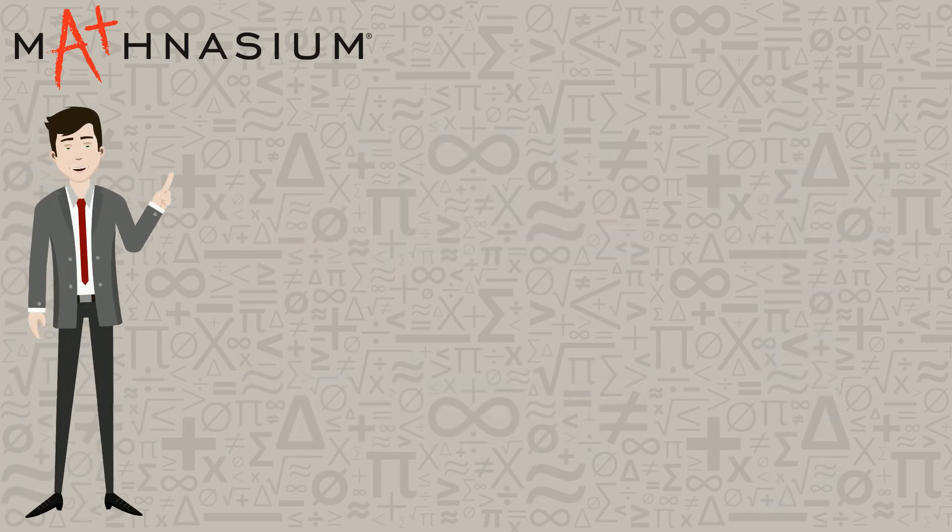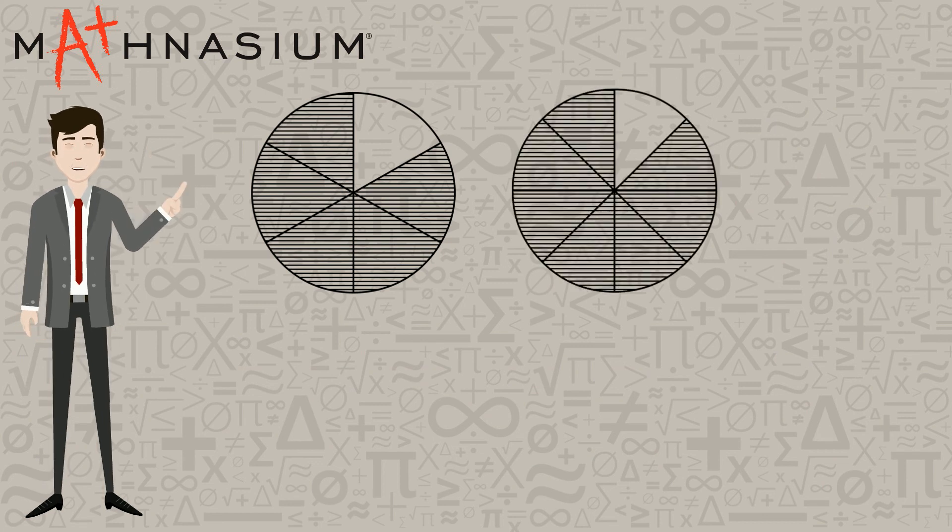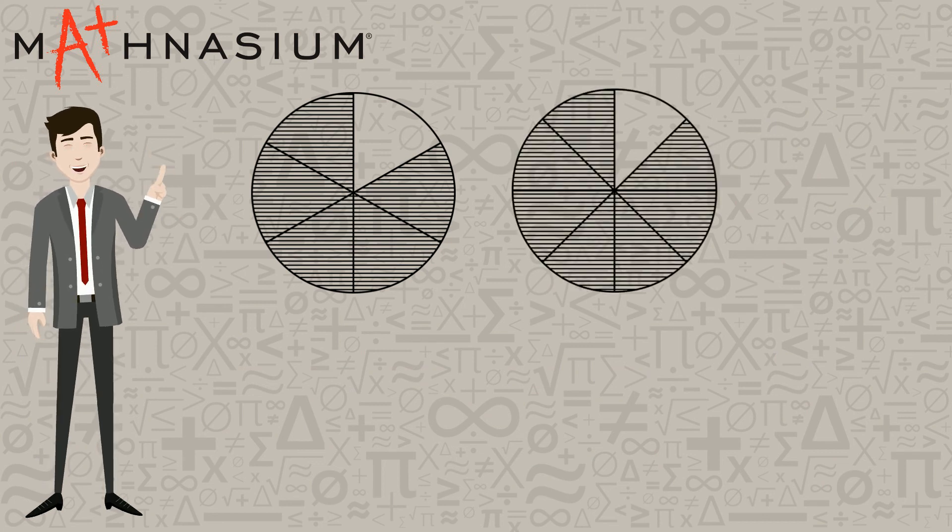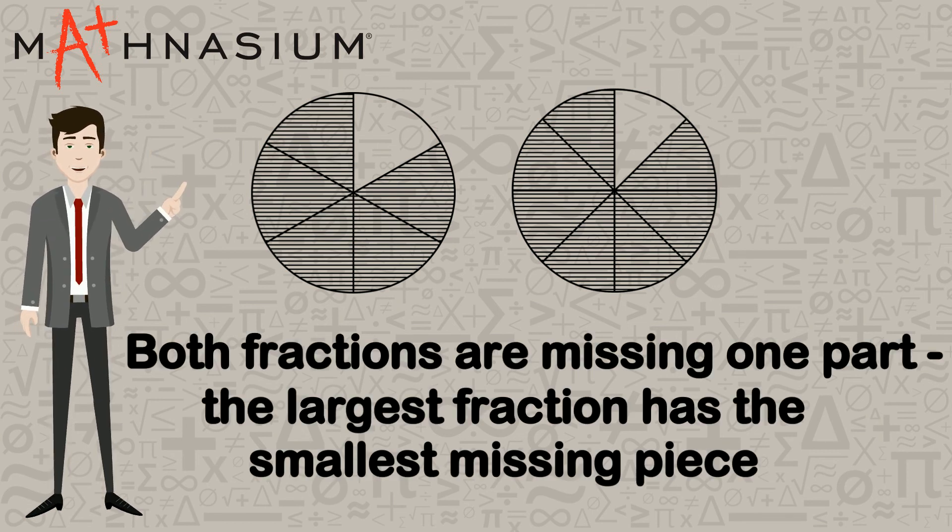With fractions, it is important to remember that as the number of pieces gets larger, the size of the pieces gets smaller. This means that when comparing two fractions where both fractions are missing one part, the largest fraction has the smallest missing piece.